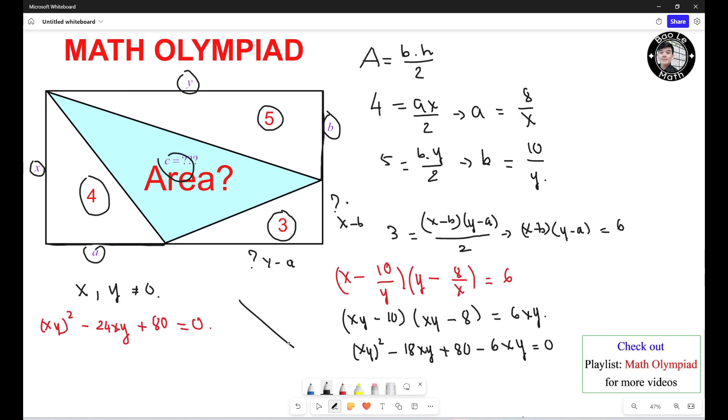Alright we use factoring to factor this one out. So we have negative 24 right here, 2 numbers multiply equal 80 add to negative 24, it should be negative 20 and negative 4. Alright so it could be SY minus 20 times SY minus 4 equals 0. Now you let each of this one equal 0, SY minus 20 equals 0 so SY should equal 20, and then SY should equal 4.